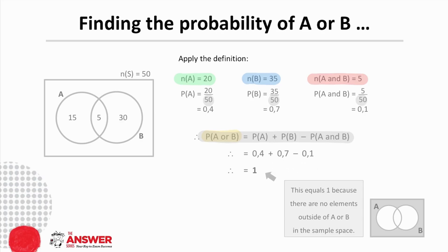In this case, the answer for the probability of A or B is 1, which tells us that all the elements in this sample space lie in A or B.